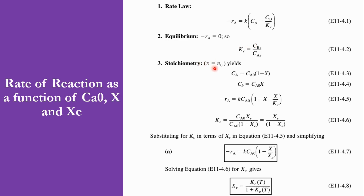For stoichiometry, since it is a liquid phase reaction, V = V0. We can write CA = CA0·(1-X) and CB = CA0·X. Substituting these into the rate equation: -rA = K·CA0·[(1-X) - X/Ke]. CA0 is factored out. Then, substituting the equilibrium expression for Ke (which equals Xe/(1-Xe)), we get: -rA = K·CA0·(1 - X/Xe). This is how we express the rate equation in terms of K, CA0, X, and Xe.